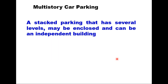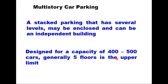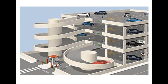The second off-street system is multi-story car parking — a stacked car park with multiple stories. It may be enclosed and can be an independent building. Vehicles move between floors by means of ramps, which can be interior or exterior. These are generally designed for a capacity of 400 to 500 cars, and five floors is typically the upper limit, otherwise parking and un-parking times become very long. Ramps can be inside or outside the building, and all floors can be enclosed and covered.